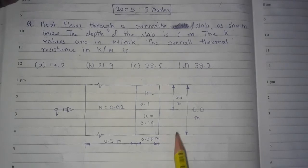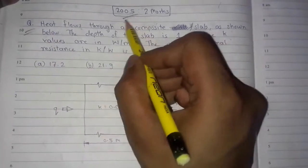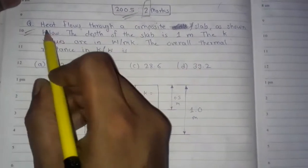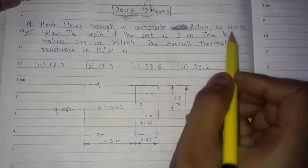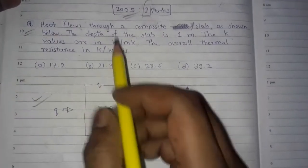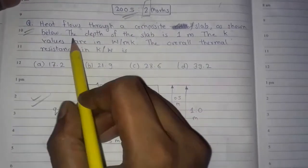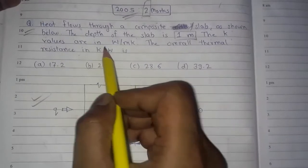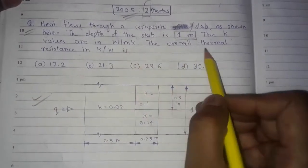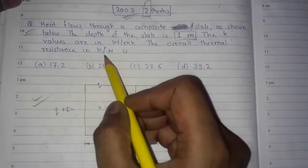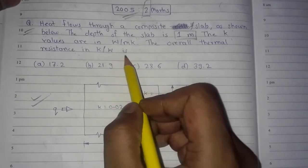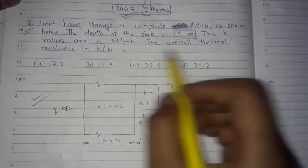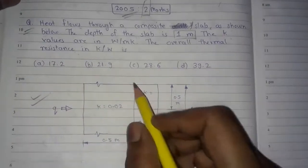Hi friends, welcome. This is a question from the 2005 GATE exam paper and it was for two marks. The question is: heat flows through a composite slab as shown below. The depth of the slab is one meter, the k values are in watt per meter kelvin, and we have to find the overall thermal resistance in kelvin per watt. These are the options.